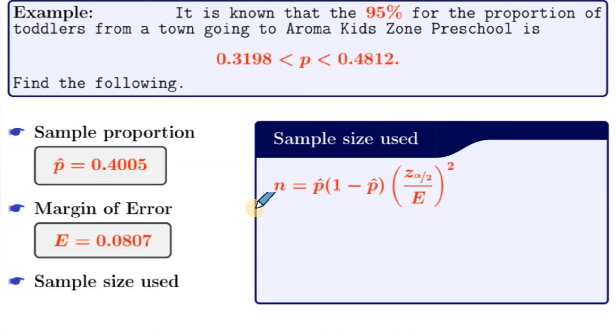Now let's find the sample size. We have this formula for sample size. We know our p-hat is 0.4005, and our E is the margin of error, which is 0.0807. And Z alpha by 2 is the critical value. Z alpha by 2 for 95% is 1.96. Now once we know p-hat, E, and Z alpha by 2, all we need to do is substitute those values into this formula.